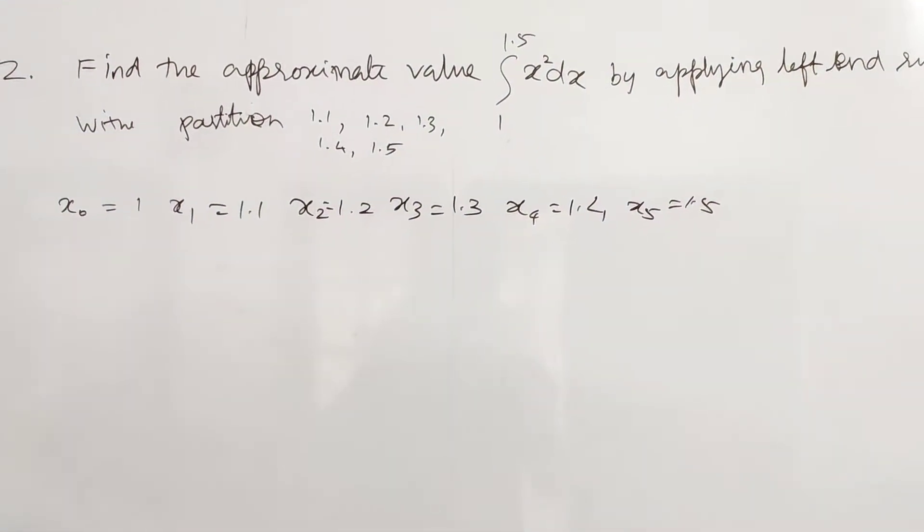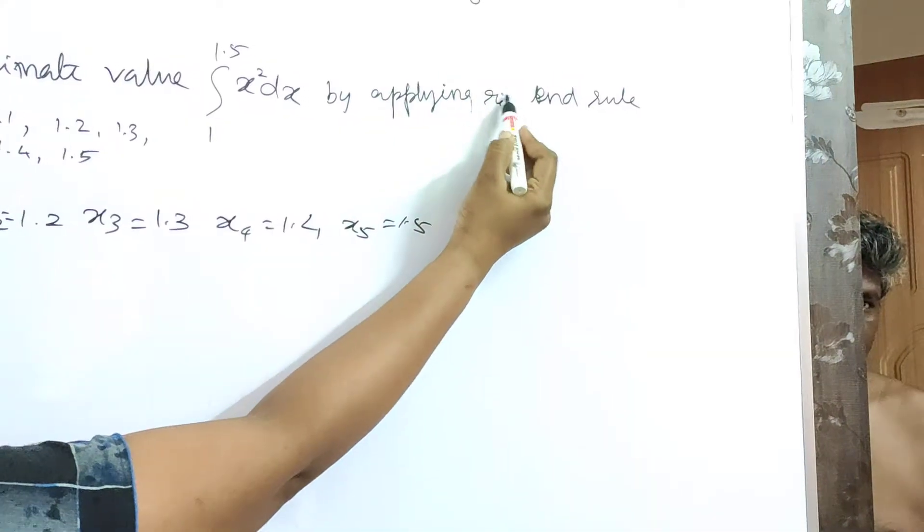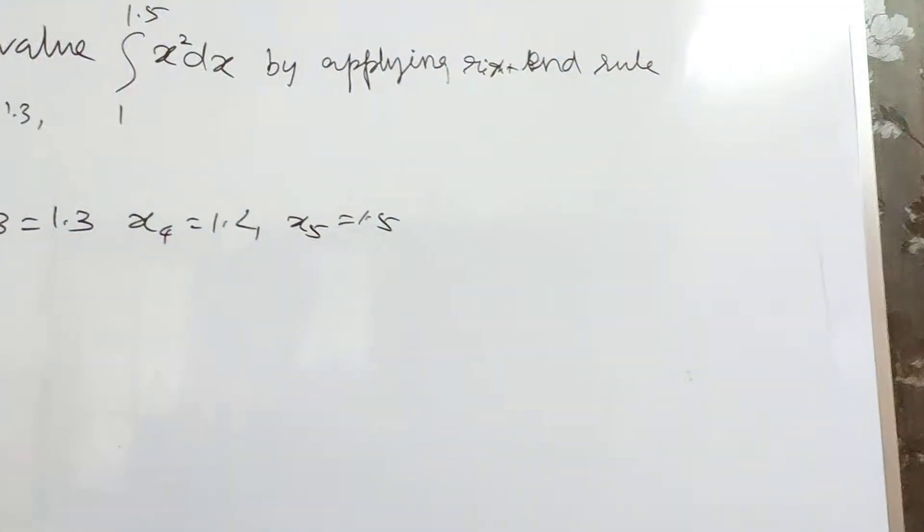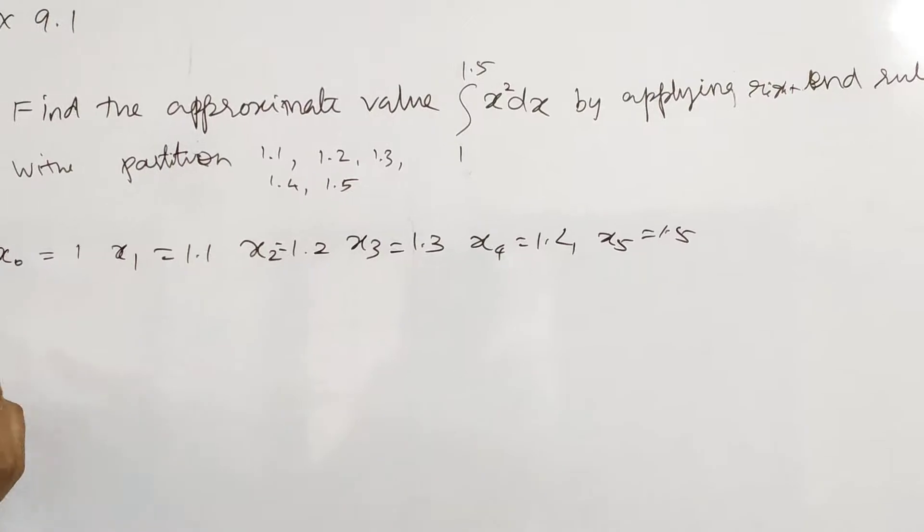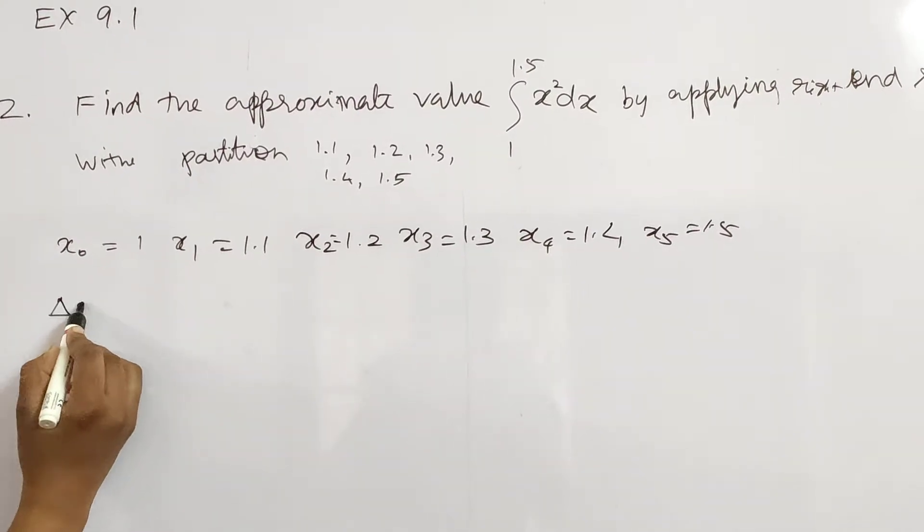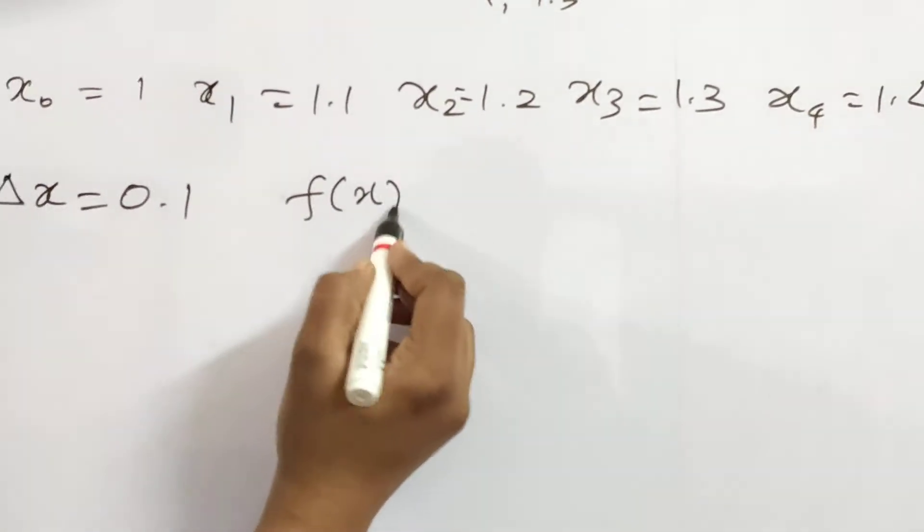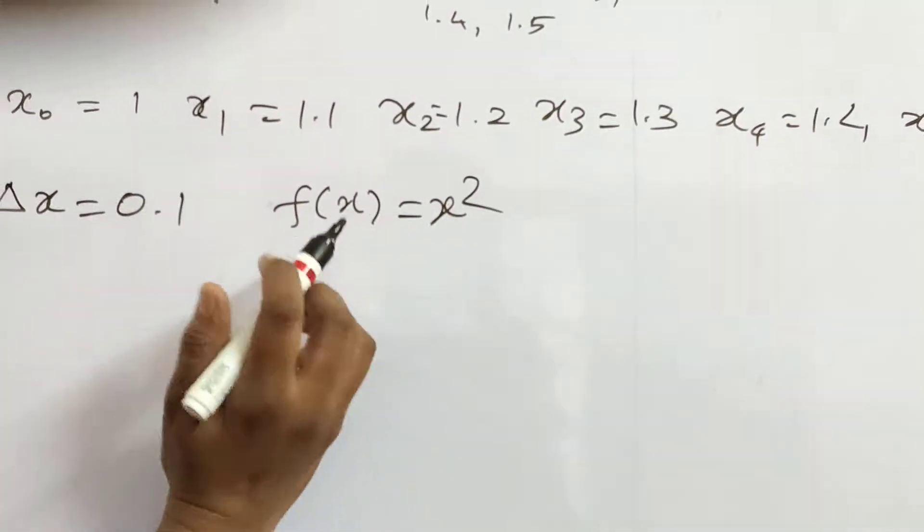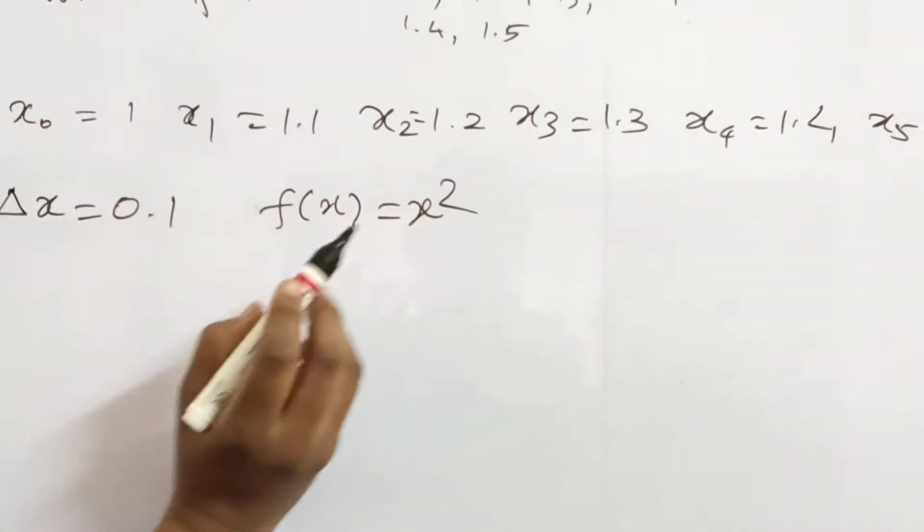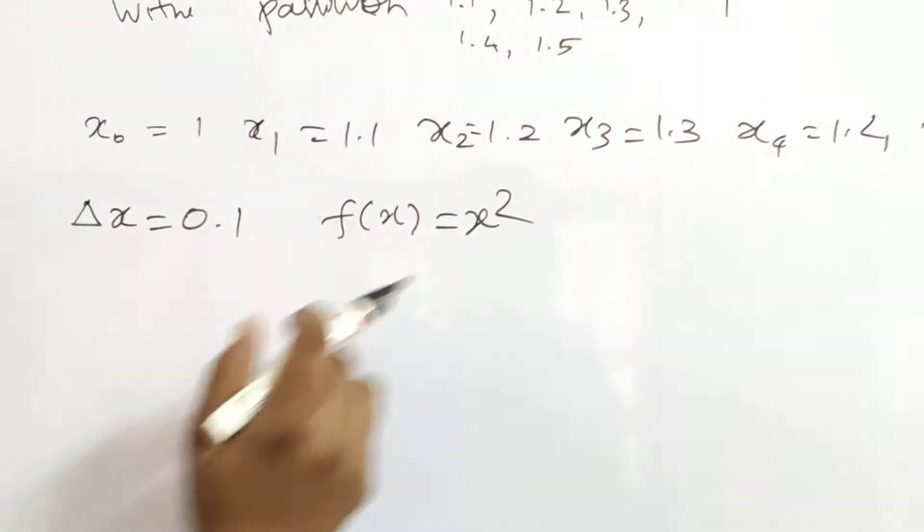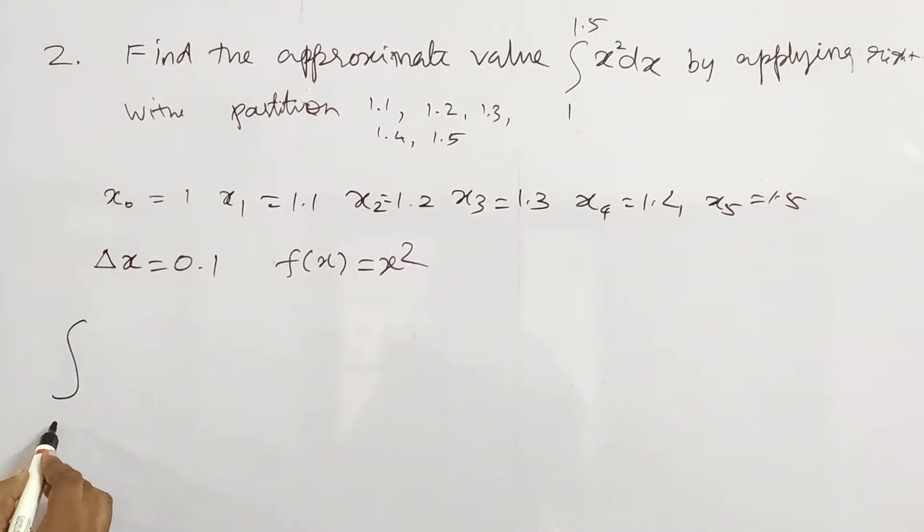Normally we can do it using right-hand rule. Delta x equals 0.1. For the approximate value we want using right-hand rule.